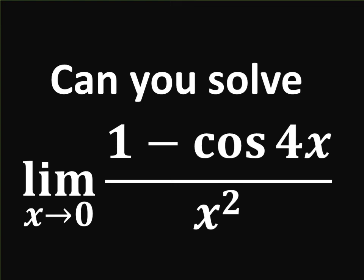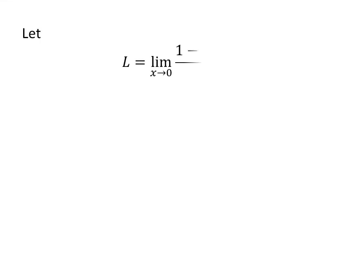In this video, we will learn to find the limit of 1 minus cosine of 4 times x upon square of x as x approaches 0. Let us assume L is the limit of 1 minus cosine of 4 times x upon square of x as x approaches 0.